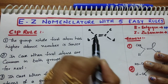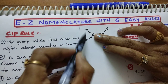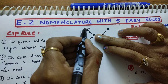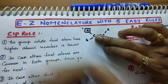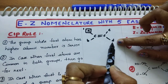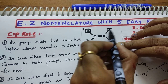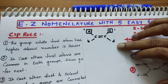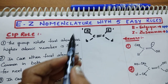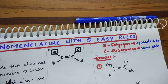Suppose, to this carbon, 2 different groups are there: A and B. In these 2 different groups, just see which is the senior group. Suppose if A is the senior group, number it as 1. Next, see the other carbon. In those 2 groups, C and D, which one is the senior group? Suppose C is the senior group, then number it as 1. If both senior groups are present on the same side, then we call it Z nomenclature. Z means 'Zusammen', which is a German word meaning same side.